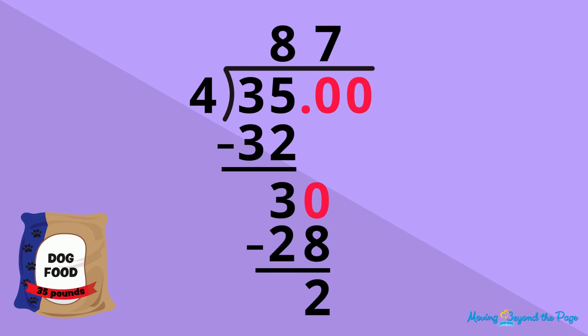Remember that we're not changing the value of the dividend when we do this because we're just adding zeros after the decimal point. Now, we bring that 0 down.